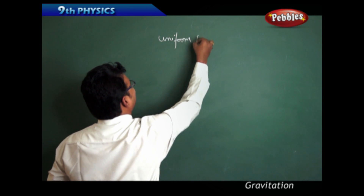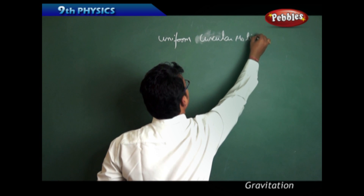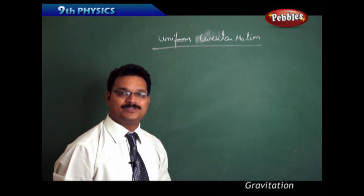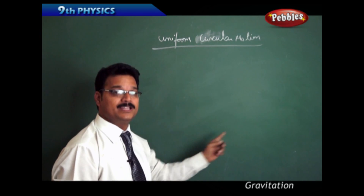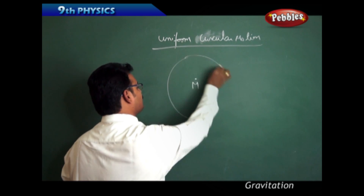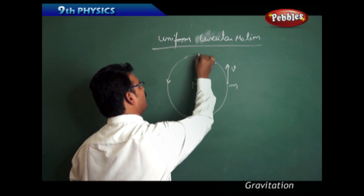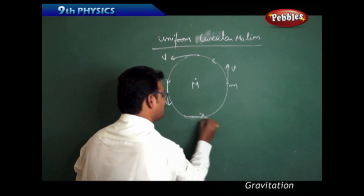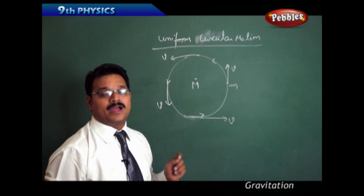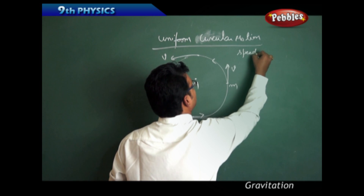The next concept is uniform circular motion. The title tells you that the body should be in circular motion, moving with constant speed. Take a massive body — a smaller body of mass m is rotating in such a manner that the speed of the body at each and every point is constant: same V, V, V. So anybody describing a circular path and moving with constant speed is called uniform circular motion. Speed equals constant.